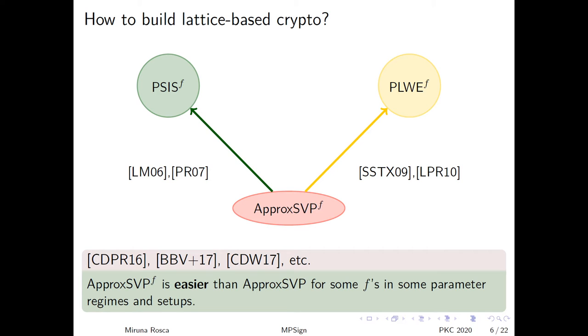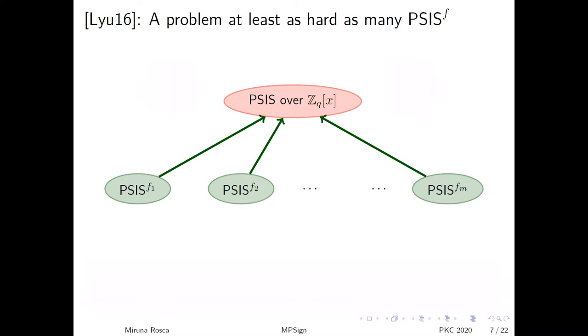In a series of works, it has been shown that for certain polynomials f, like cyclotomics or multi-quadratics, and for certain ideal lattices, the corresponding approximate SVP problem is easier than the general one. To mitigate the risk of choosing a polynomial f for which the corresponding approximate SVP problem is easy, Rybashewski introduced a variant of polynomial SIS, polynomial SIS over Z_q[x], which does not depend on any f and which is at least as hard as polynomial SIS for exponentially many f's.